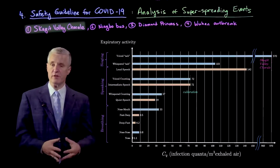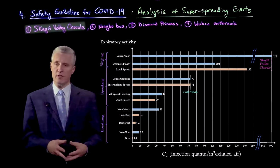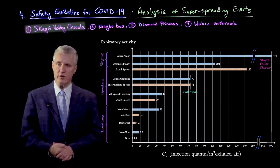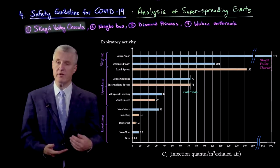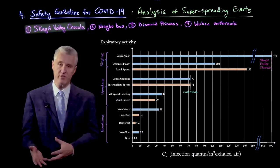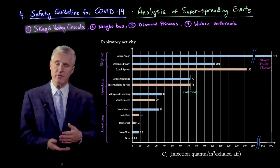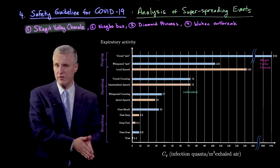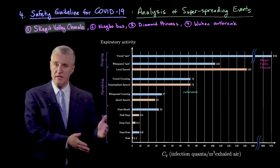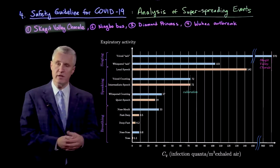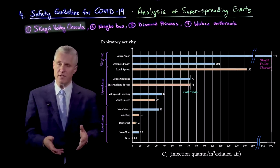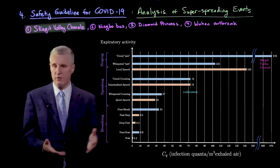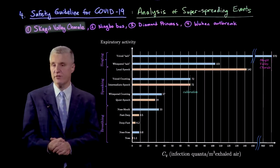Now, if we go to the next figure, we can include all of these estimated total quanta concentrations corresponding to different hypothetical forms of respiration in the Skagit Valley Choir and use that for rescaling. We can say the choir was actually involving singing, and that gave us a number around 900. And then if we rescale, the other amounts of respiratory droplets corresponding to different activities would have correspondingly scaled values of CQ.